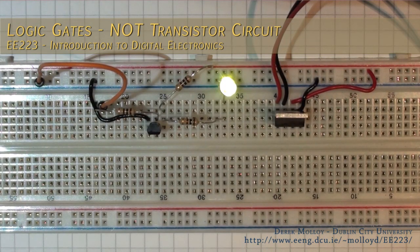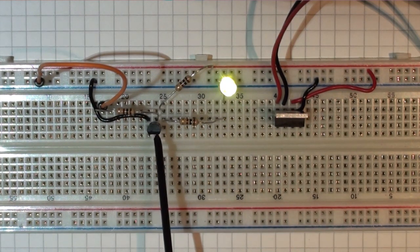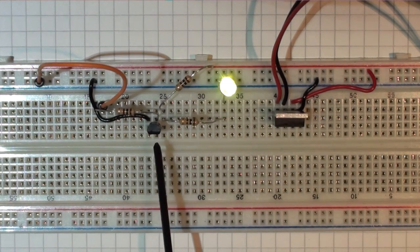In this circuit, I'm demonstrating how we can create an inverter using a single transistor. Here we're using the BC547B.